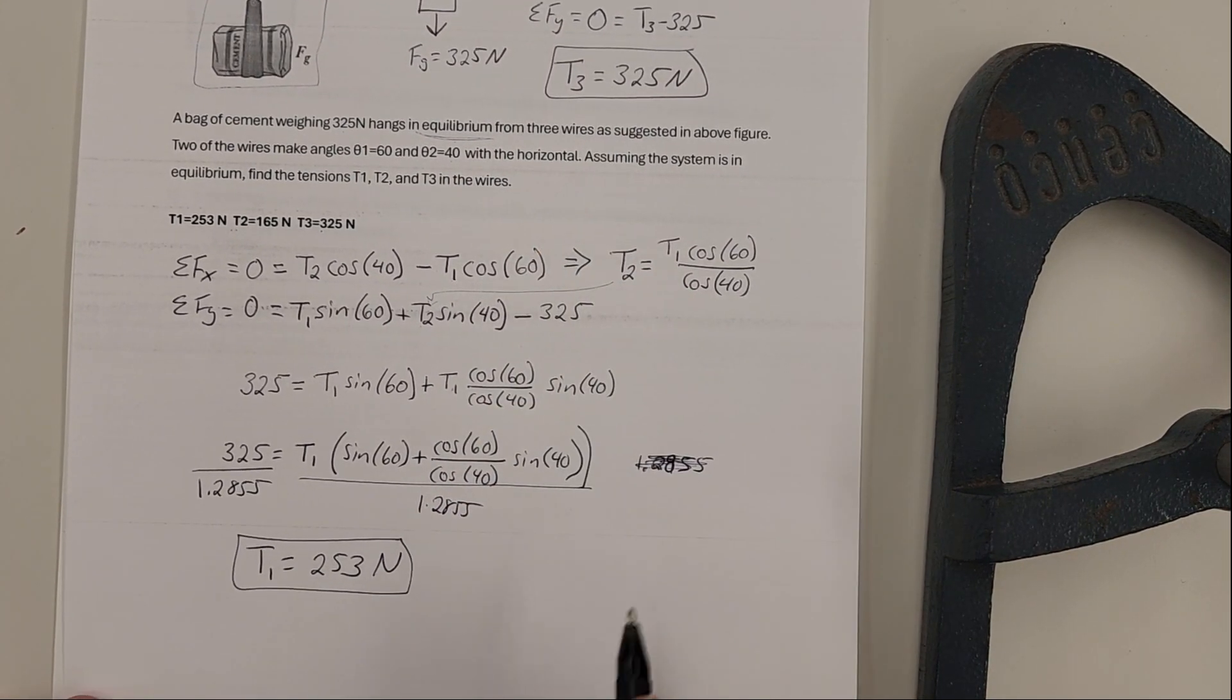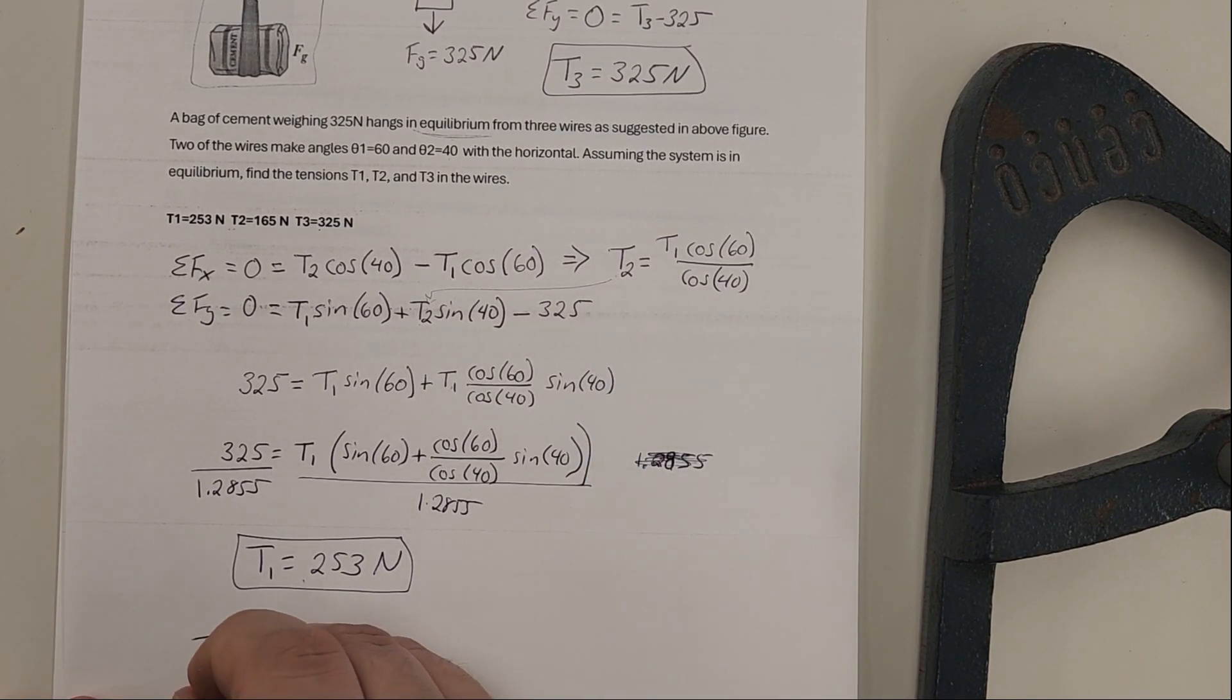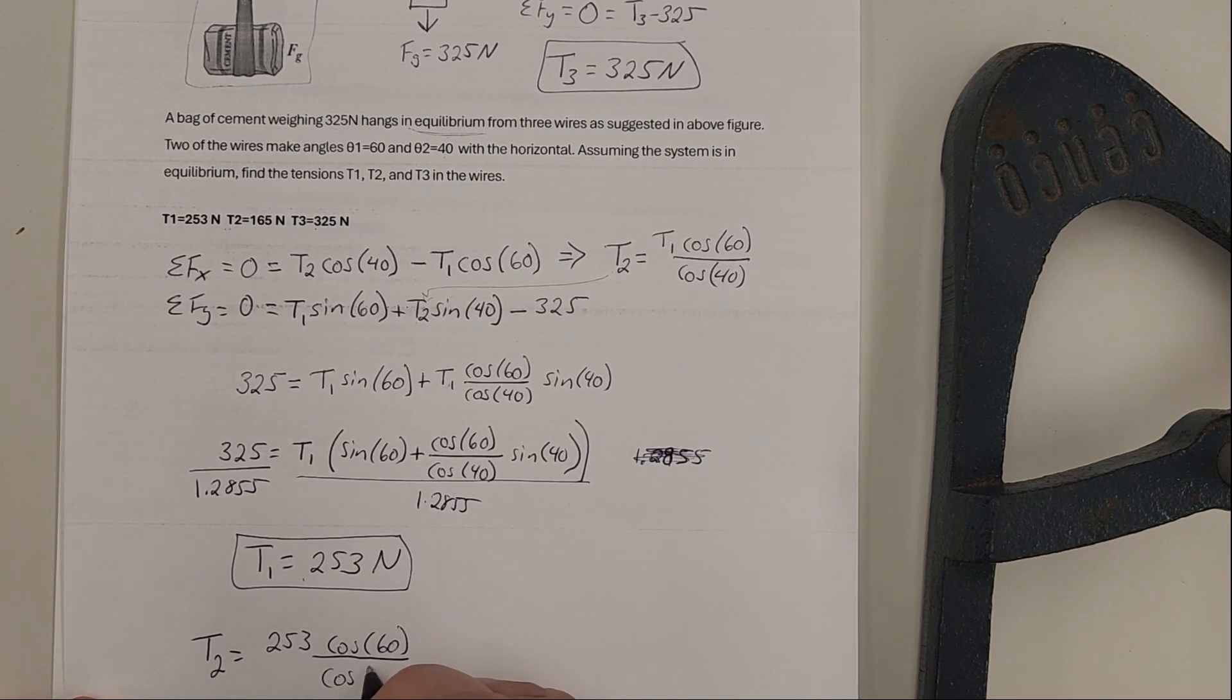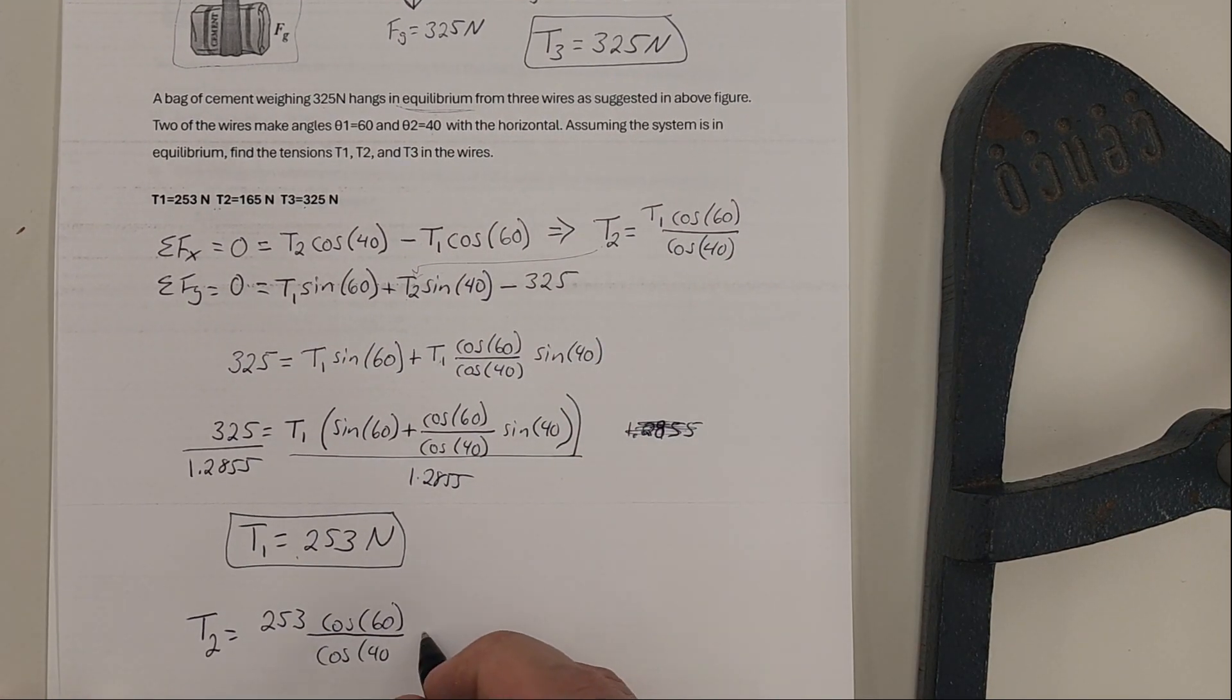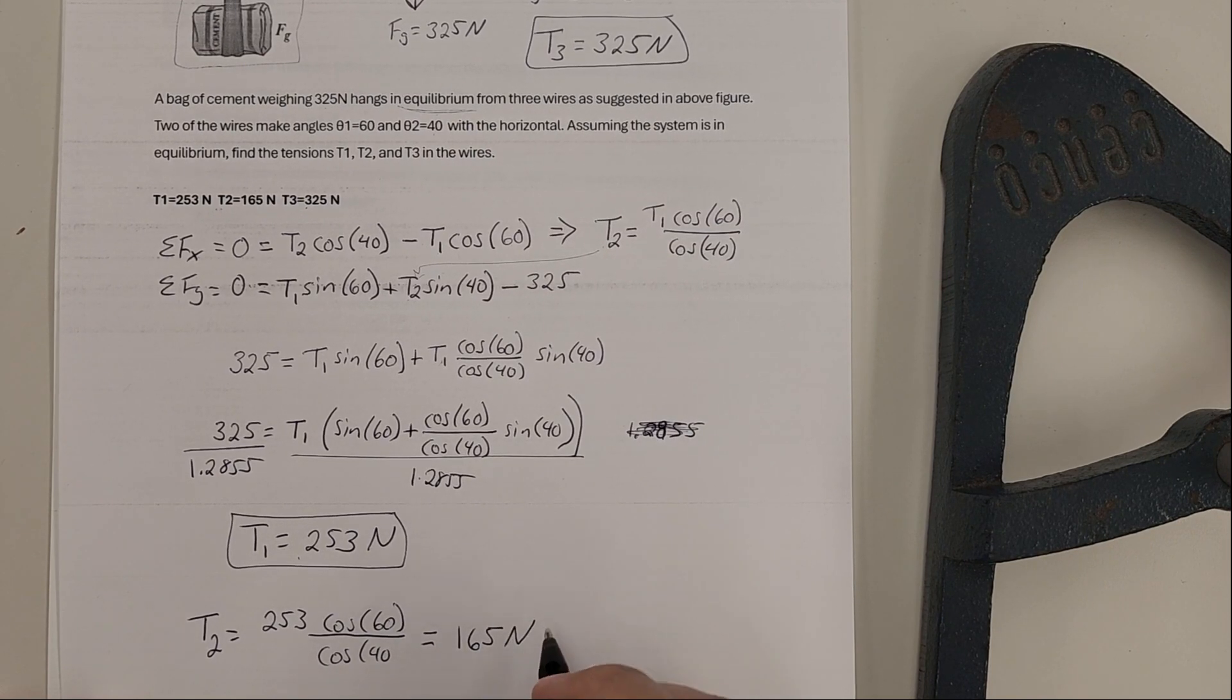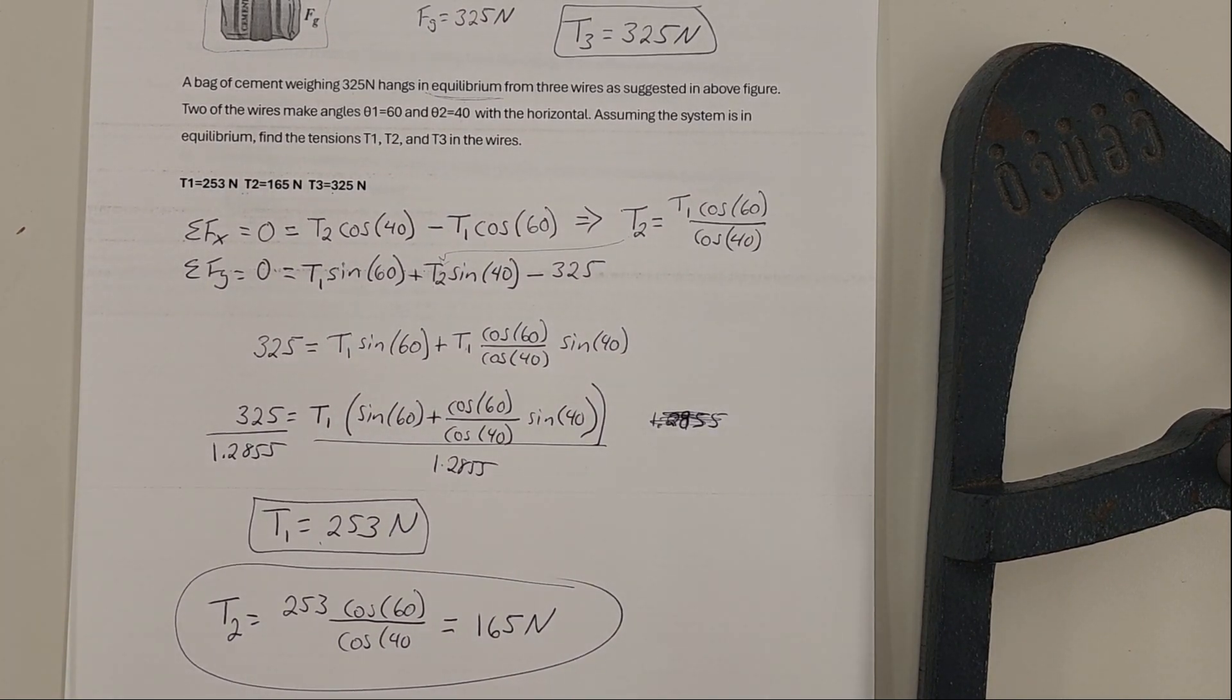To get the last one, we have T3, we have T1, to get T2, we can take T1 and just plug it right into T2 over here. So we would have T2 is equal to 253 times the cosine of 60 divided by the cosine of 40. And if we take and we plug that into our calculators, we should get 165 newtons for T2. And that's how we get T1, T2, and T3.